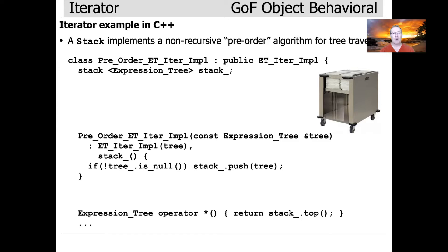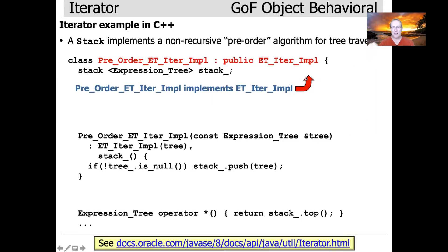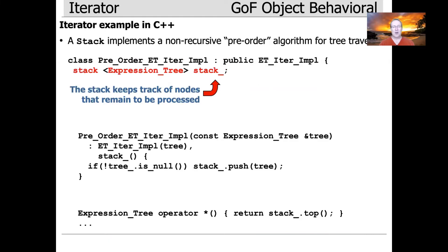This implements a non-recursive pre-order algorithm for tree traversal, and you can see it's going to leverage an existing abstract base class called ET iter impl. Obviously, this is going to be implemented using a stack. We're going to have the implementation inherit from ET iterator impl, which is the abstract base class. We'll have the stack of expression trees, and this will keep track of the nodes that need to be processed as we go through our non-recursive pre-order traversal — also known as depth-first search.